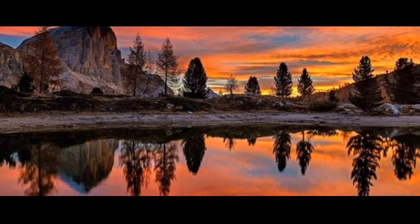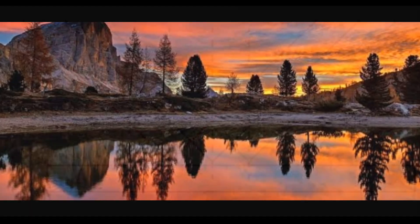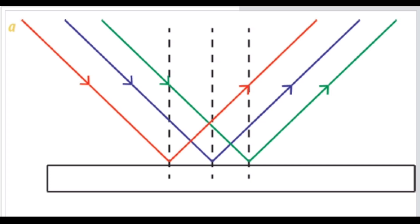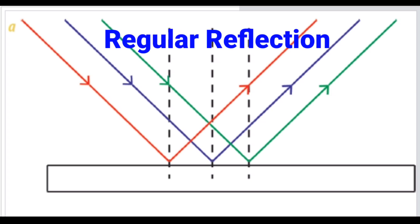When light falls on the interface of two different mediums, all or some of it will return back to the previous medium — this is called reflection of light. When light rays fall on a smooth surface, the maximum portion returns back to the previous medium; this is called regular reflection.